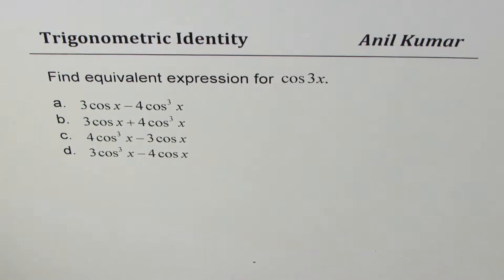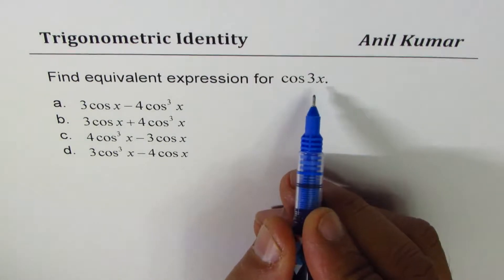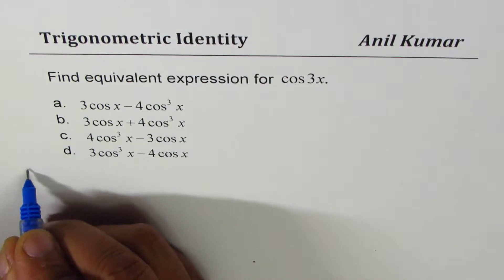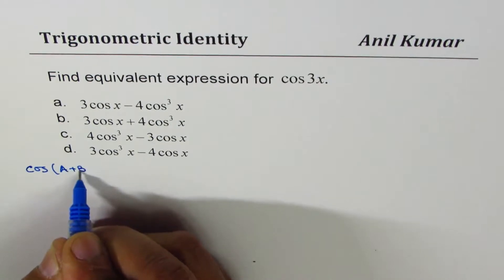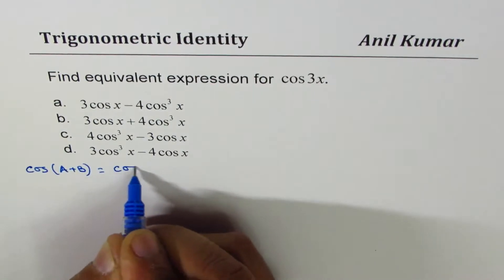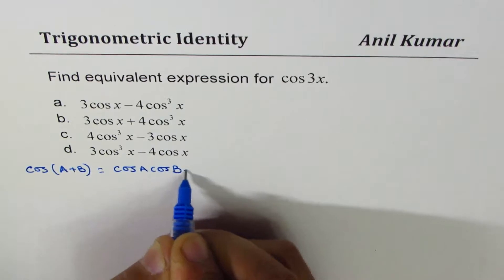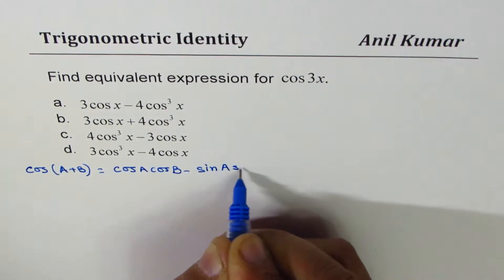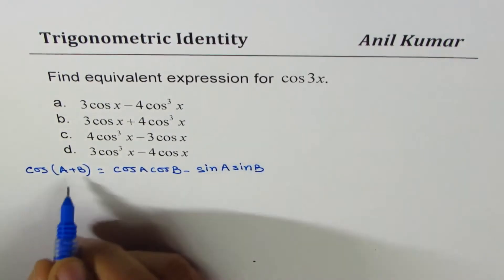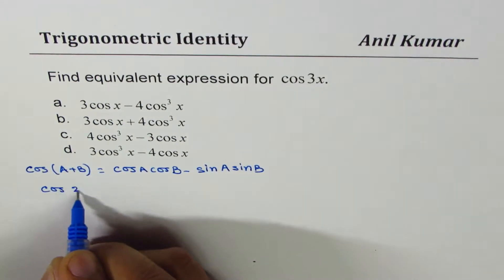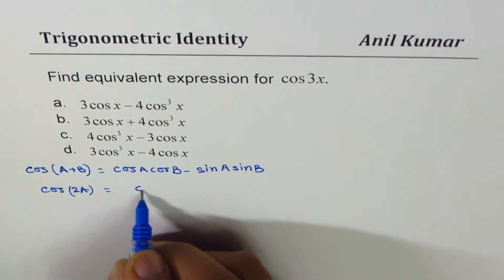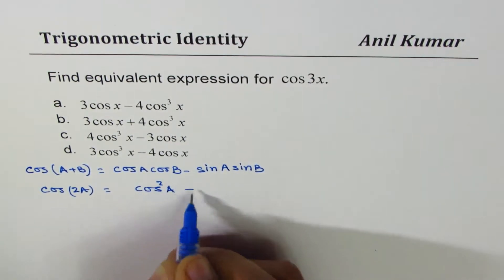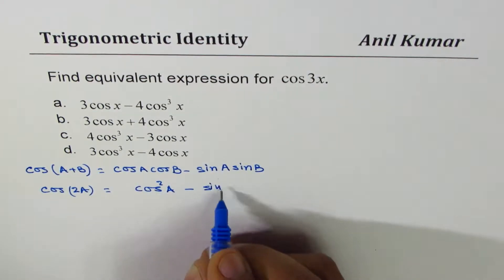I'll take this opportunity to derive the formula also. To find cos 3x, we need these formulas: cos(a+b) = cos a cos b − sin a sin b. If I make a equal to b, I can write cos 2a as cos a cos a, which is cos² a, minus sin a sin a, which is sin² a.